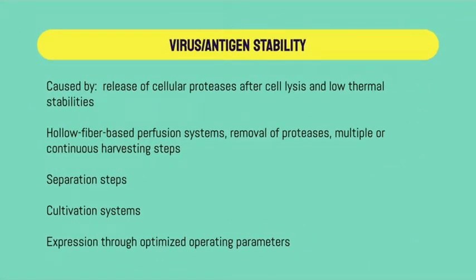Strategies are applied to avoid virus or antigen degradation, which is caused by the release of cellular proteases after lysis. Thus, operation modes of virus or antigen production are available. After harvesting, clarification is performed by filtration. The advantages of vaccine manufacturing include the use of bioreactors — a closed system including harvest vessels and pipework — which improves and ensures product quality. Advanced cultivation methods maximize yields by controlling cell growth, virus replication, or protein expression, and another advantage is cost reduction.